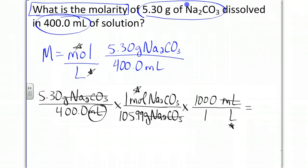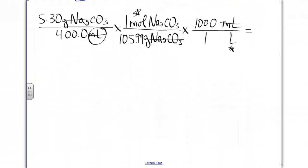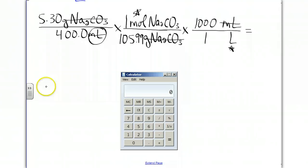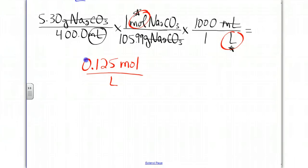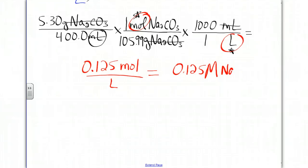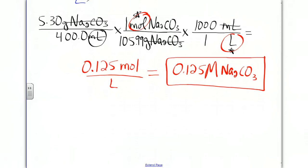As everything cancels out, it provides us with the units moles over liters, which is what we need. For the final answer, type in 5.30 divided by 400.0 divided by 105.99 times 1,000. That gives us 0.125. Our units are moles over liters, which is the same as writing 0.125 M (molarity) of sodium carbonate. This is how your final answer should be expressed.